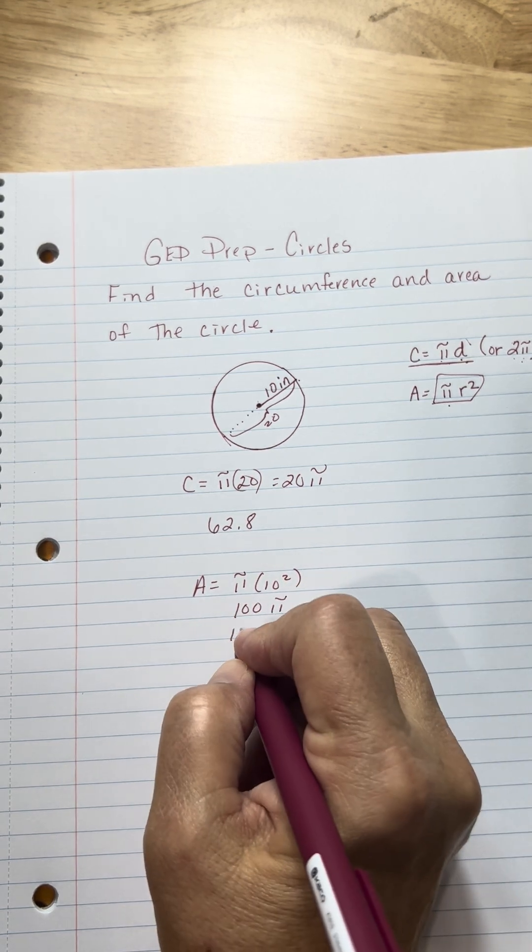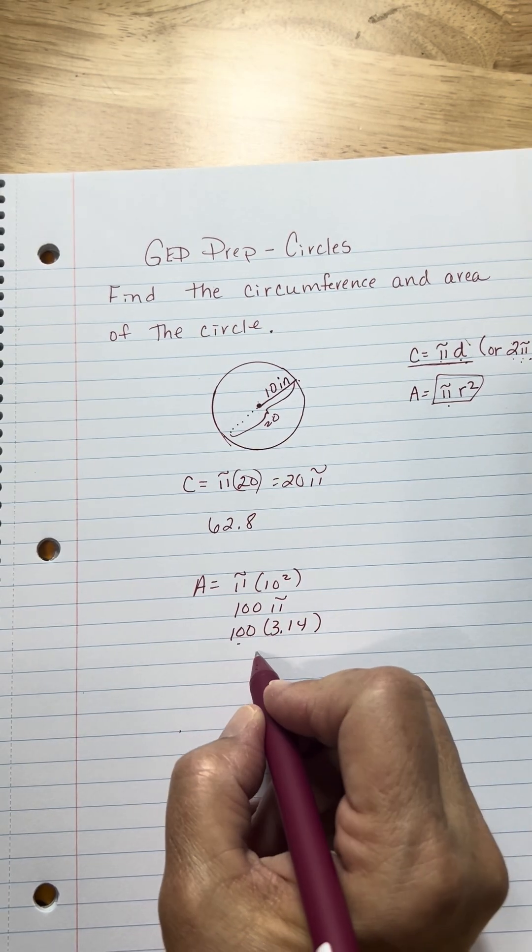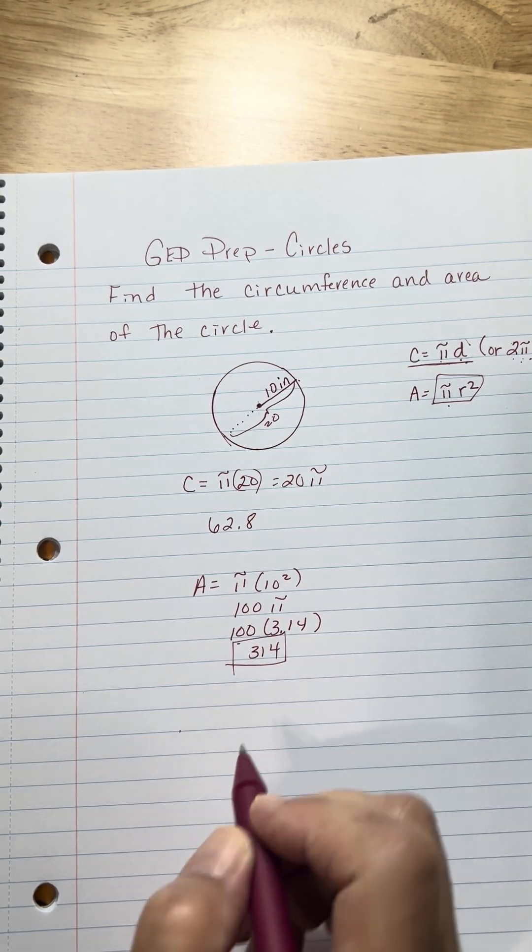And you don't even have to get the calculator out for that one. If pi is 3.14, when you multiply it times 100, you're going to get 314.